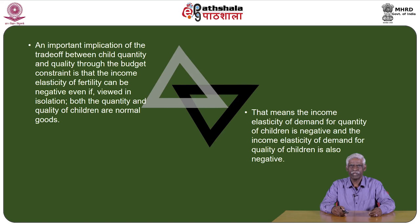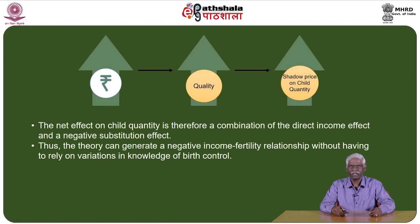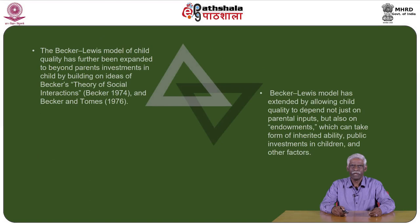An important implication of the quantity-quality trade-off through the budget constraint is that the income elasticity of fertility can be negative even if, viewed in isolation, both quantity and quality of children are normal goods. If child quality is normal, a rise in income increases quality, which in turn raises the shadow price of child quantity. The net effect on child quantity is therefore a combination of the direct income effect and a negative substitution effect. Thus the theory can generate a negative income-fertility relationship without relying on variations in knowledge of birth control.